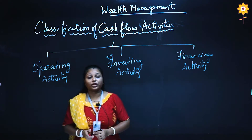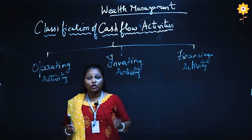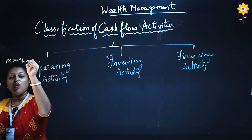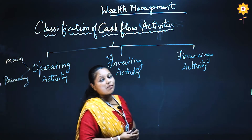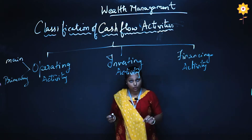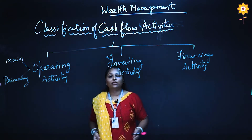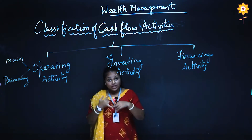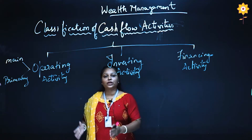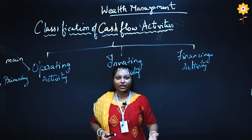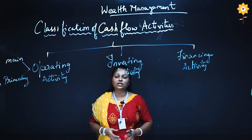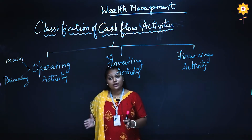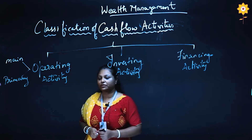When we talk about operating activity, operating activities are those activities which are the primary activities of our business — we can consider them as main or primary activities. For example, if there is a manufacturing company that produces clothes, their main activity would be to collect the raw materials and produce the clothes. So any money which is coming in or going out while doing these particular activities — that is procurement of raw materials — all expenses which we are spending on producing or manufacturing of goods, but related with cash, all those activities are going to come under our operating activities.